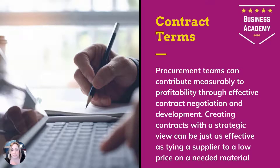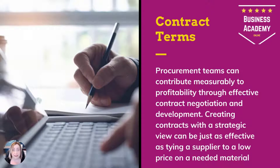Creating contracts with a strategic view can be just as effective as tying a supplier to a low price on a needed material. You don't have to always go for the lowest price, but it means we are protected and on our terms. If they deliver late, we can penalise them with our liquidated damages clauses and so on. This can mean that we're more protected, less risk, and therefore more profit for our organisation.